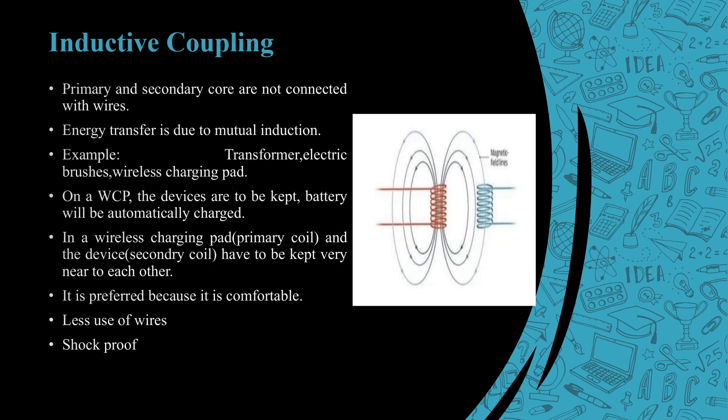Inductive coupling: primary and secondary coils are not connected with wires. Energy transfer is due to mutual induction. Examples: transformer, electric brushes, and wireless charging pad. On a wireless charging pad, the devices are kept near to each other and the battery will be automatically charged. It is preferred because it is comfortable, less use of wires, and shock proof.